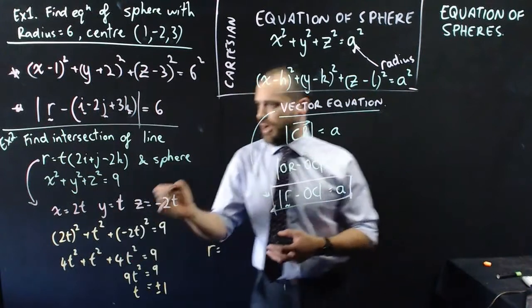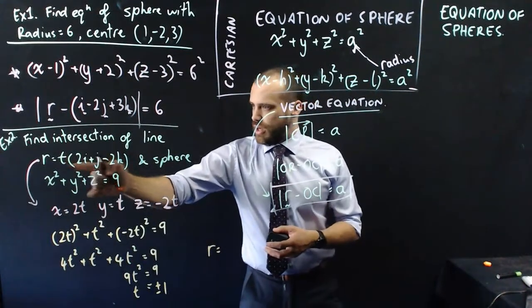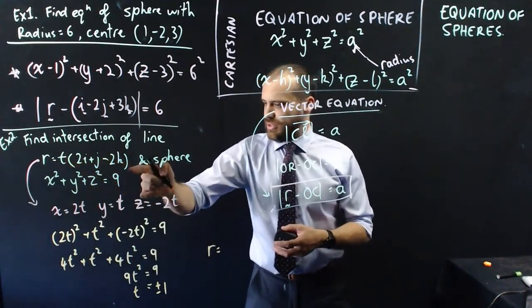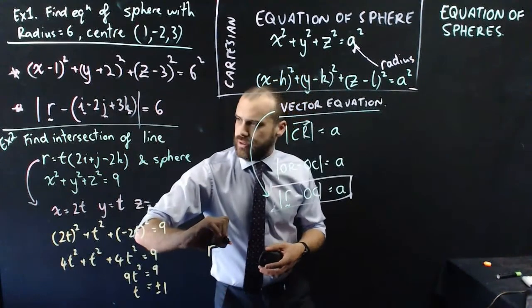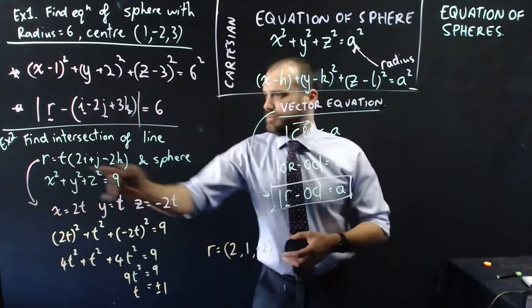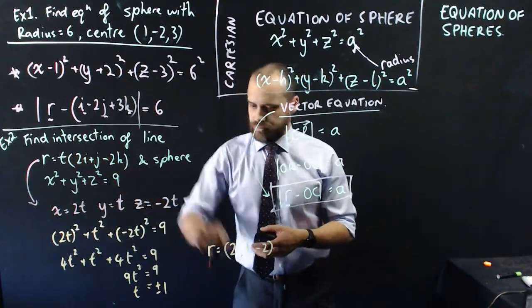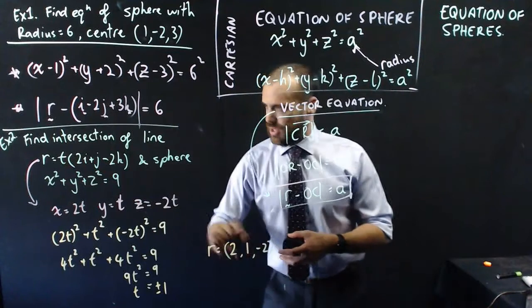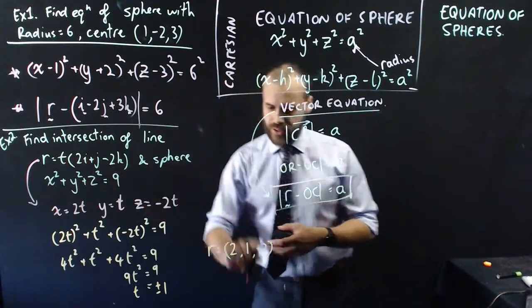So now I can say that r equals 1 times all of that, which is just going to be 2, 1, negative 2. 1 times 2 is 2, 1 times 1 is 1, 1 times negative 2 is negative 2.